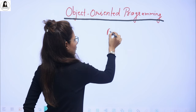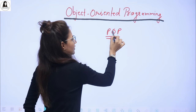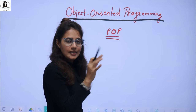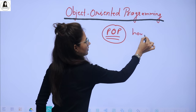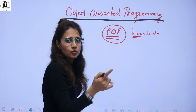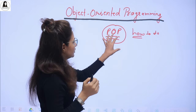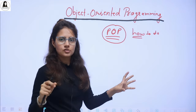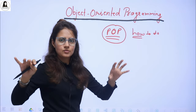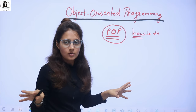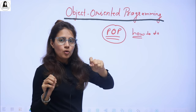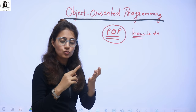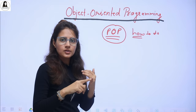C is a Procedure Oriented Programming language — POP. Now let's understand what is POP. Procedure Oriented Programming — in this we basically focus on how to do things. Mainly the focus is on the procedure, meaning how. In this approach, a program is basically a collection of functions. We write many functions, calling one function from another, and these functions are interrelated and interdependent with each other. This kind of approach is known as the POP approach — Procedure Oriented Programming. We focus on how to do, on the actions, the procedures, or the functions. A program has many functions.